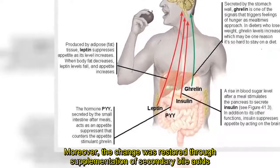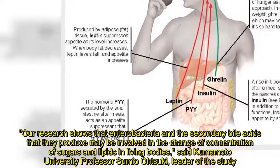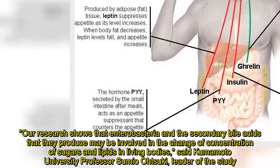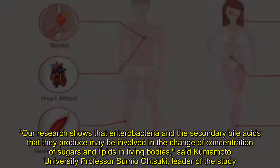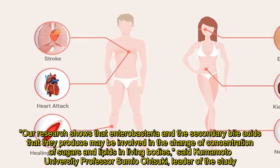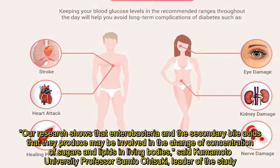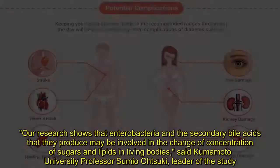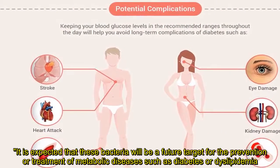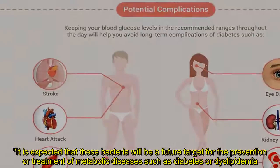Research shows that enterobacteria and the secondary bile acids that they produce may be involved in the change of concentration of sugars and lipids in living bodies, said Kumamoto University professor Sumio Atsuki, leader of the study. It is expected that these bacteria will be a future target for the prevention or treatment of metabolic diseases such as diabetes or dyslipidemia.